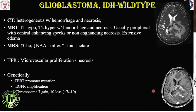Glioblastoma, IDH wild-type: CT scan appearance is heterogeneous with areas of hemorrhage and necrosis. On MRI, the tumour is T1 hypo-intense and T2 hypo-intense with peripheral hemosiderin staining and dark areas on gradient and T2 sequences. MR spectroscopy shows elevated choline — a marker of cell membrane turnover elevated in brain tumours with high cell turnover. Lipid-lactate is elevated due to necrosis. On histopathology, microvascular proliferation and necrosis indicate IDH wild-type glioma. Genetic mutations such as TERT promoter mutation, EGFR amplification, and combined chromosome 7 gain with chromosome 10 loss are also indicators of aggressiveness.